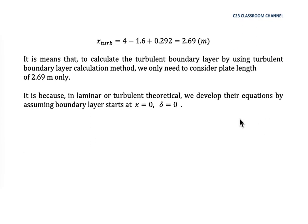So we have a 4-meter long plate, minus 1.6 meters for the laminar portion, plus 0.292 meters for the virtual extension, giving a total turbulent length of 2.69 meters. All calculations using turbulent boundary layer equations must start from x = 0 and δ = 0, which is why we need this equivalent length.